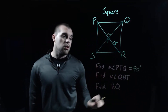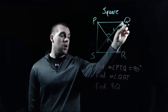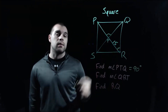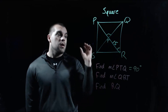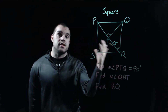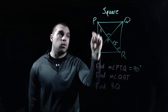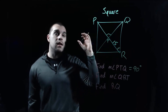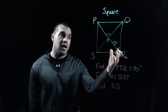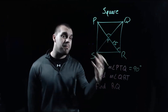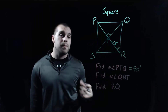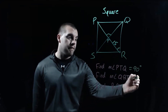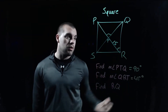Next we're going to look at the measure of angle QRT — that's this little angle in the bottom right-hand corner of our picture. This is a special kind of rectangle, so all of the corner angles have to be 90 degree angles. And since it's a special kind of rhombus, our diagonals bisect the angles. So if we bisect the 90 degree angle, we end up getting a 45 degree angle.